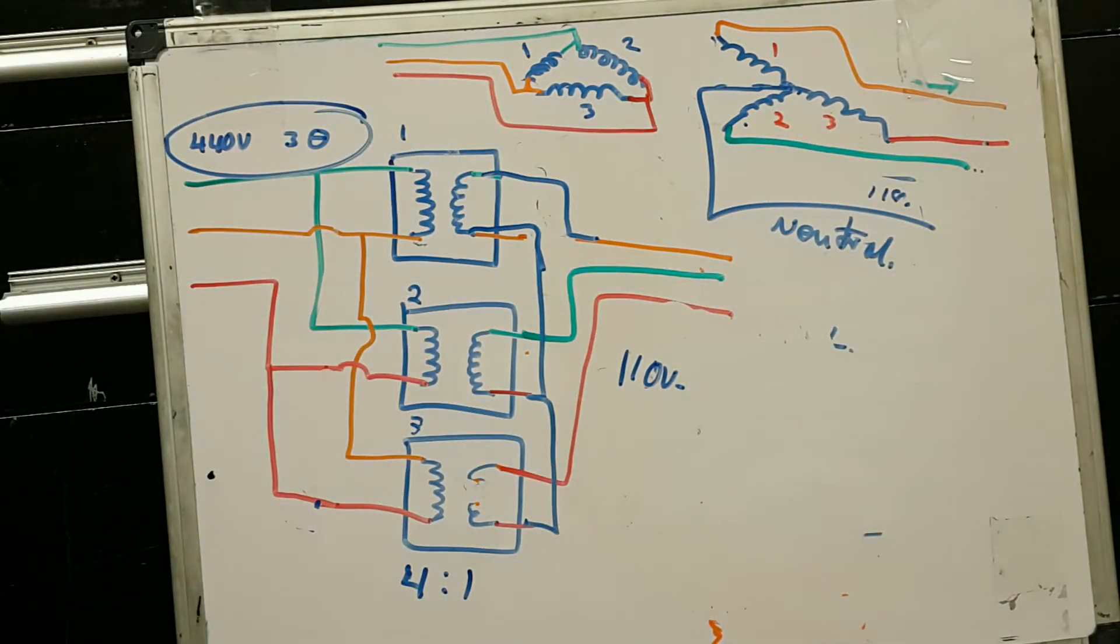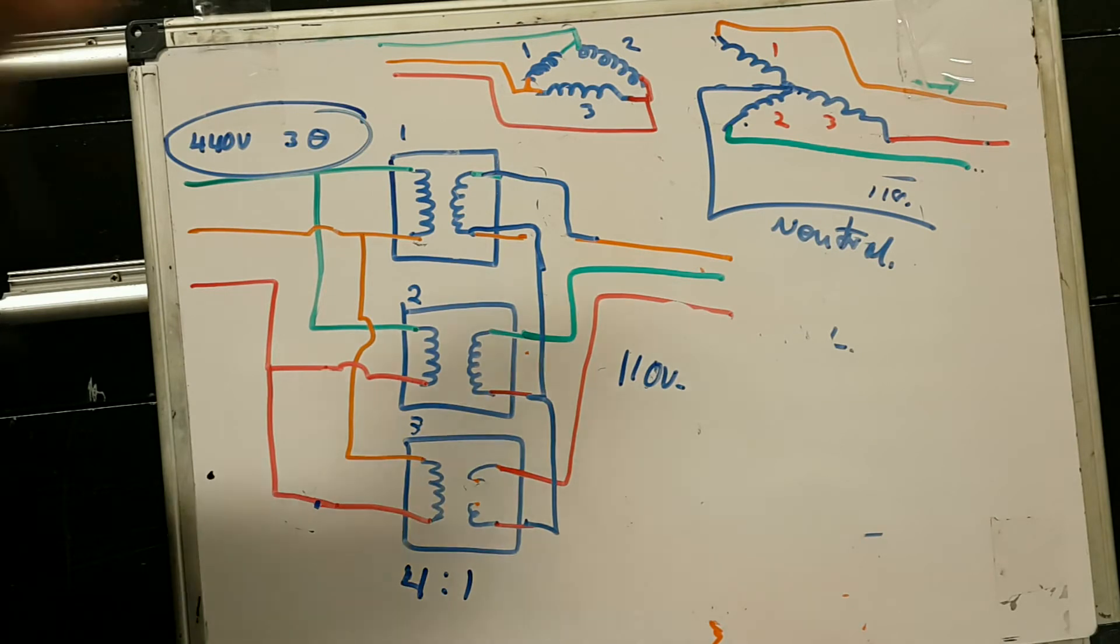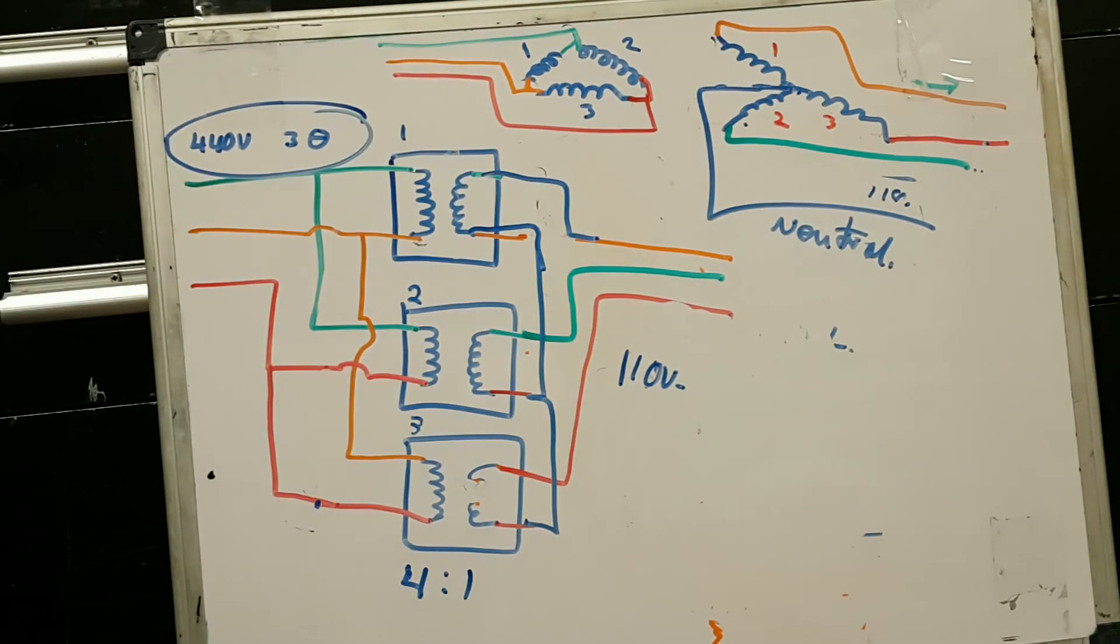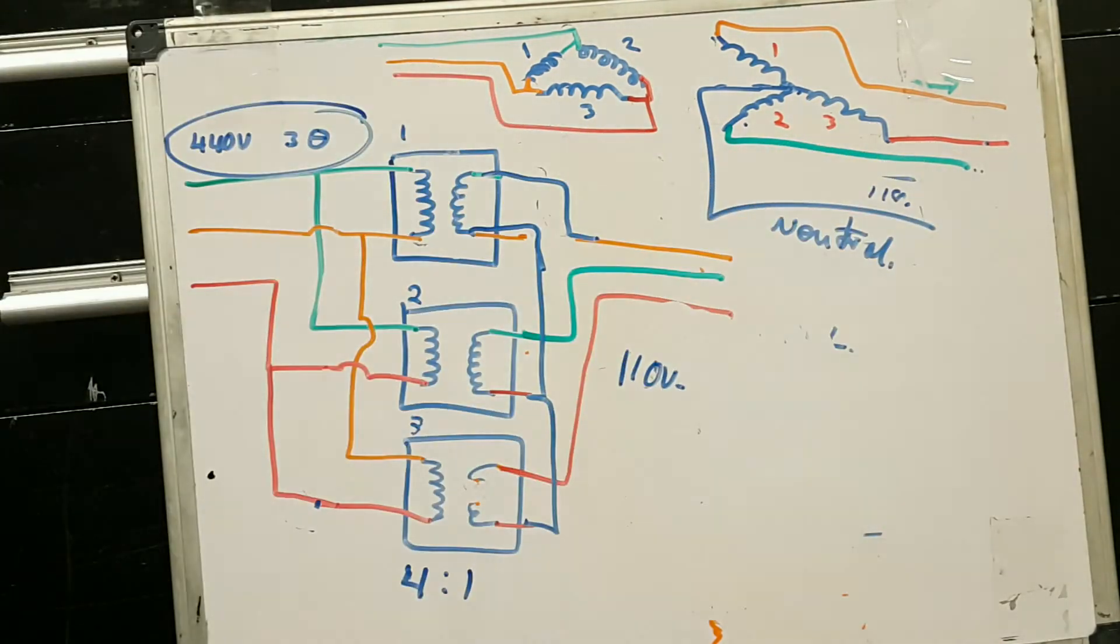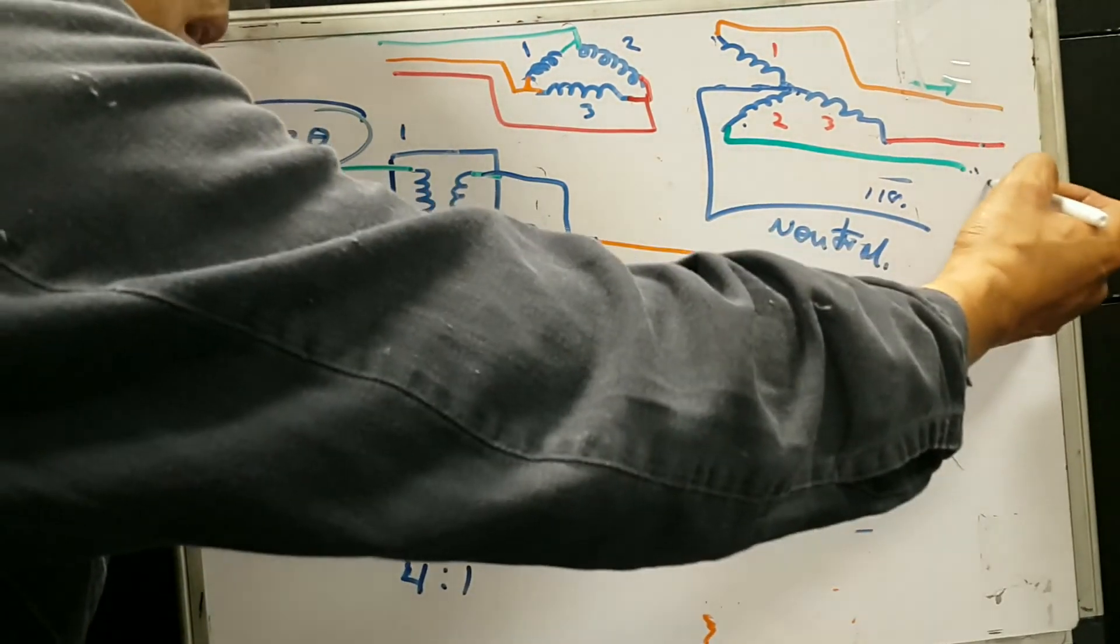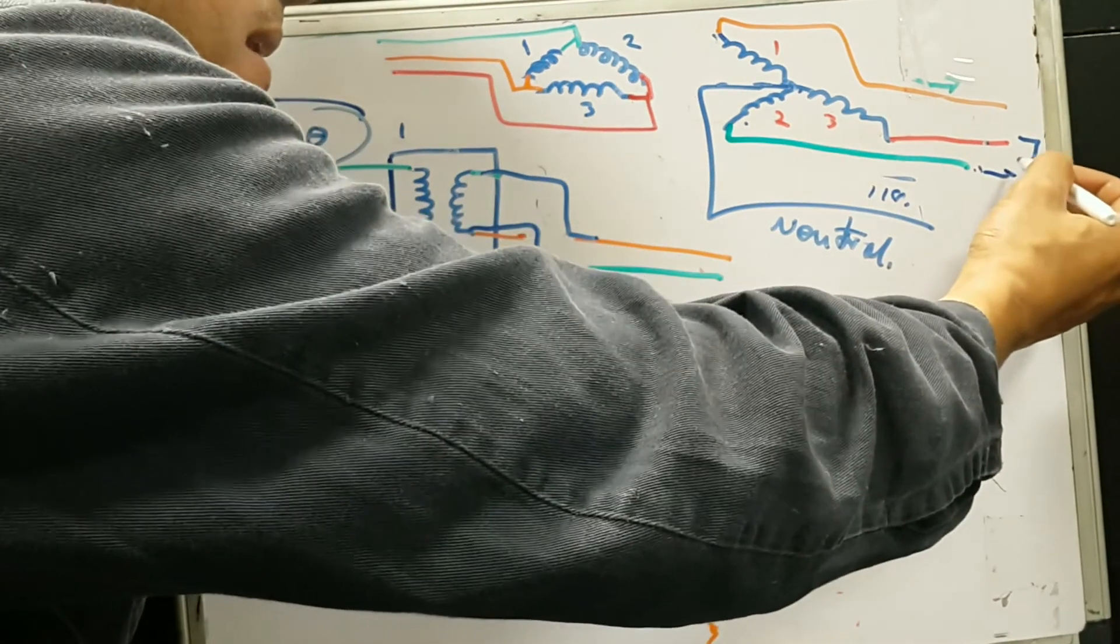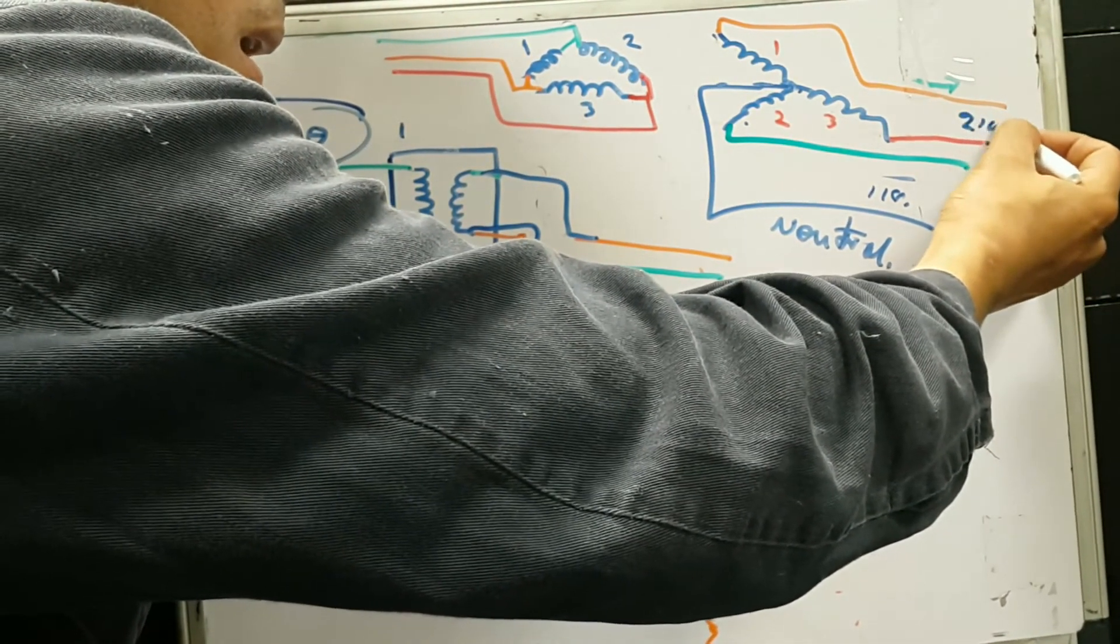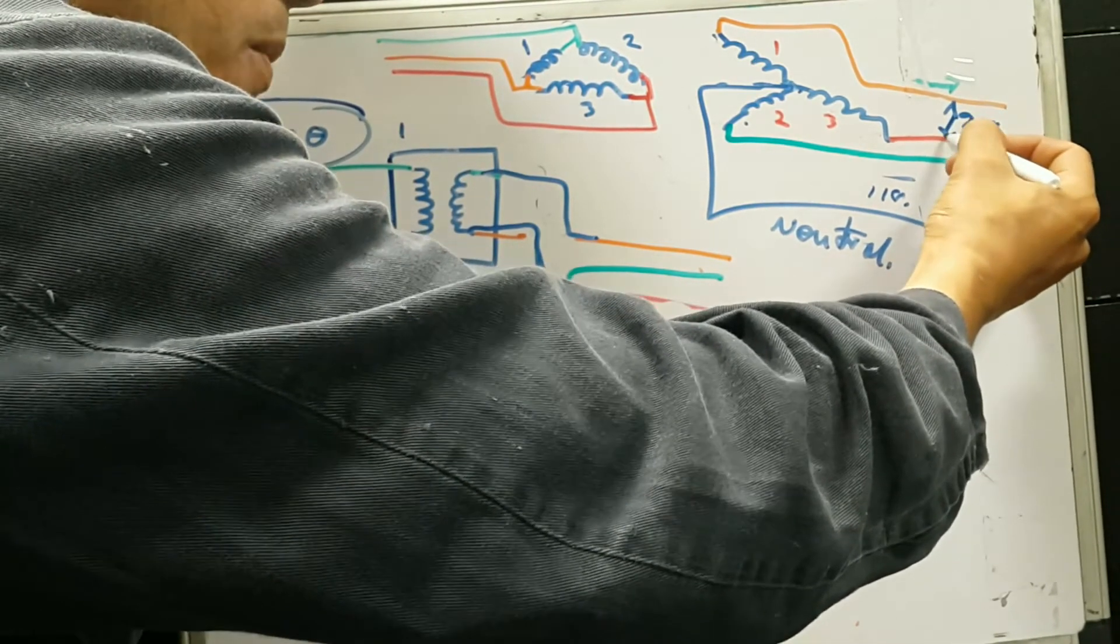So any phase to neutral is 110 volts, but any phase between each other, now the voltage adds and it's going to be close to 200 volts over here. We do that type of connection whenever we need to give power to places like washers and dryers that need special 220 volts, and this is a quick way to accomplish it.